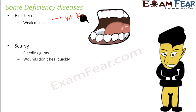Similarly, there is another disease called scurvy. In scurvy, there are bleeding gums — the gums are badly affected — and if there is a wound anywhere in the body, it doesn't heal quickly. Vitamin C is the nutrient which takes care of our teeth and gums, so when there is lack of vitamin C, that results in scurvy.